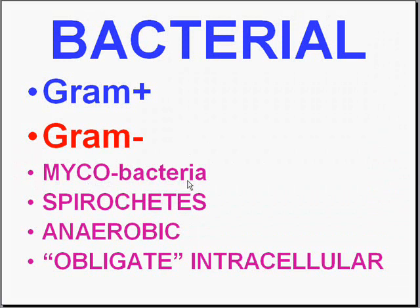Mycobacteria include not only the tubercle bacillus or acid-fast bacillus which causes TB, but also atypical mycobacteria and leprosy. Then there are spirochetes, anaerobic bacteria, and obligate intracellular bacteria. These last four generally don't have easily identifiable gram staining patterns.